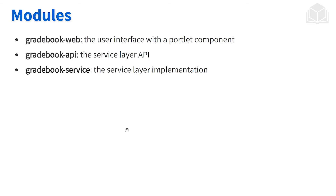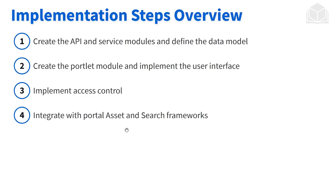Since we're going to be following a modular design pattern, we're going to have a number of different Liferay modules. We're going to have a web module for our portlet component, and we're also going to have an API and a service module — the API and then the implementation of the API. Once we hit the exercises, we're going to create the API and service modules, as well as define the data model: what makes up an assignment, and how do we get that over to the database side.